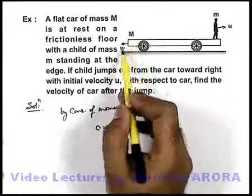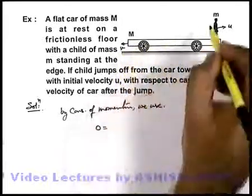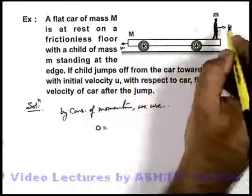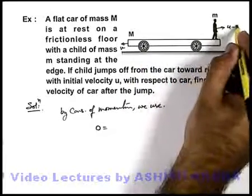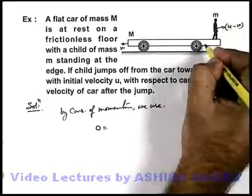And that of boy toward right will be small m into u minus v, because u is the speed which is relative to car.